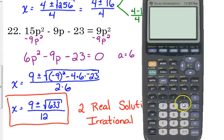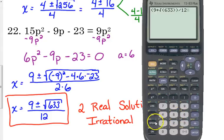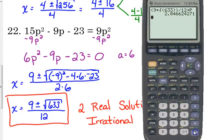Let me show you the best way to check these answers on your calculator. Type in the full expression — for example, 9 plus the square root of 633, close the parentheses on the radical, close around the numerator, divide by 12. Then press the STO button — that's the button beside the number 1 — and an arrow will appear. You can save this as any variable; since we have p's in the problem, save it as p using alpha and 8.